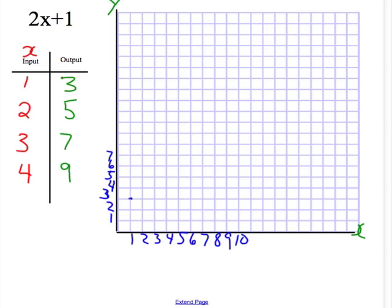When I'm at 2, my dot goes at y equals 5. When I'm at 3, my dot goes up to the 7 line. When I'm at 4, it goes up to the line with the 9.